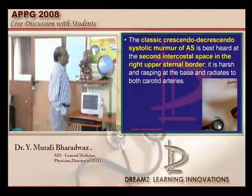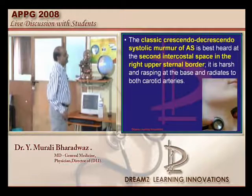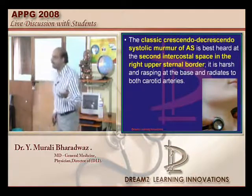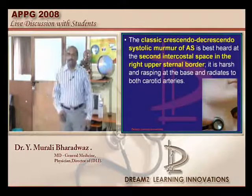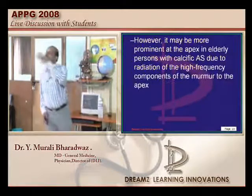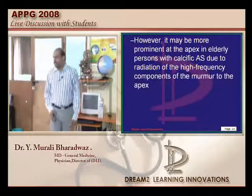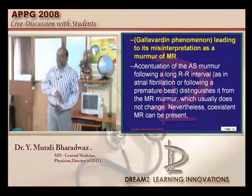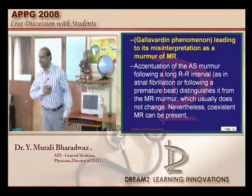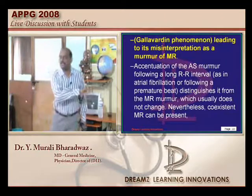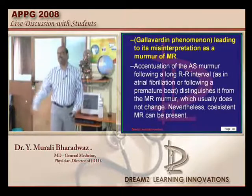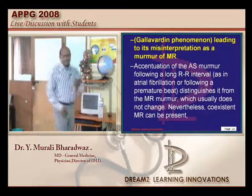The crescendo-decrescendo murmur is more prominent at the apex. Calcification also influences the murmur. It can be confused with mitral regurgitation, which also causes a systolic murmur but is usually pansystolic. The radiation of the aortic stenosis murmur toward the apex causing confusion with the MR systolic murmur is called Gallavardin phenomenon.